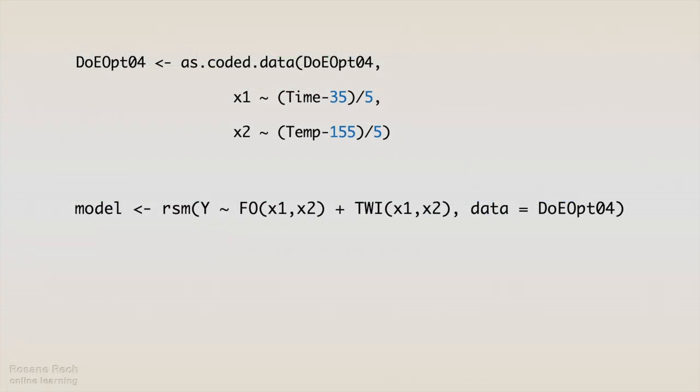We are going to use two main functions for this analysis. First, we are going to assign in the DoEOpti04 data file x1 and x2 as coded data by using the relationship between them we have just seen in the previous video. x1 as time minus 35 divided by 5, and x2 as temperature minus 155 divided by 5.